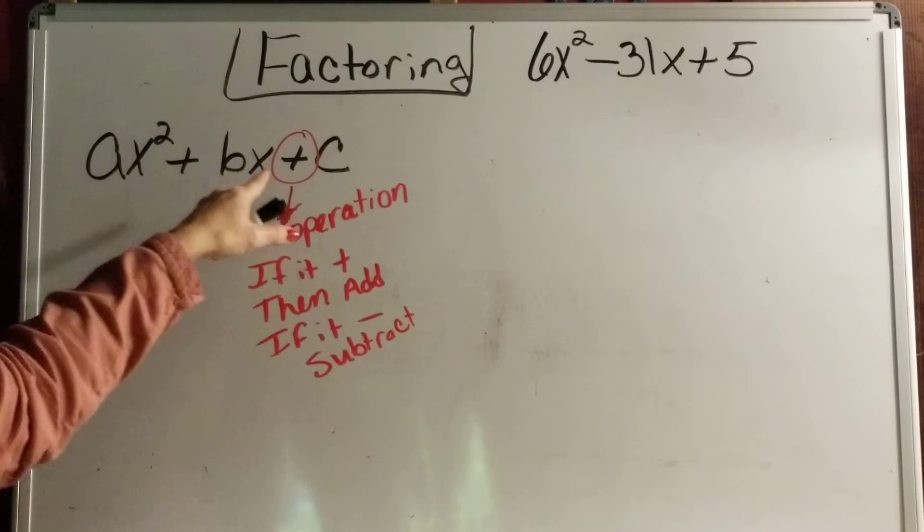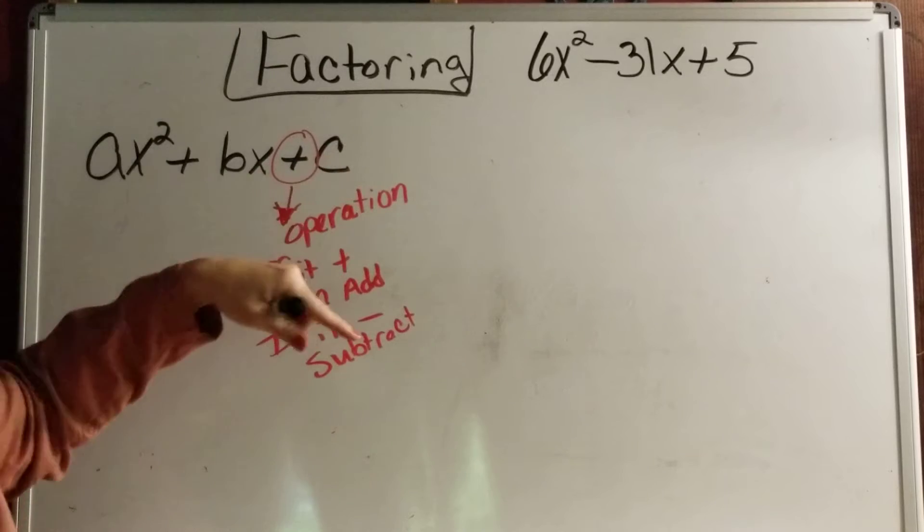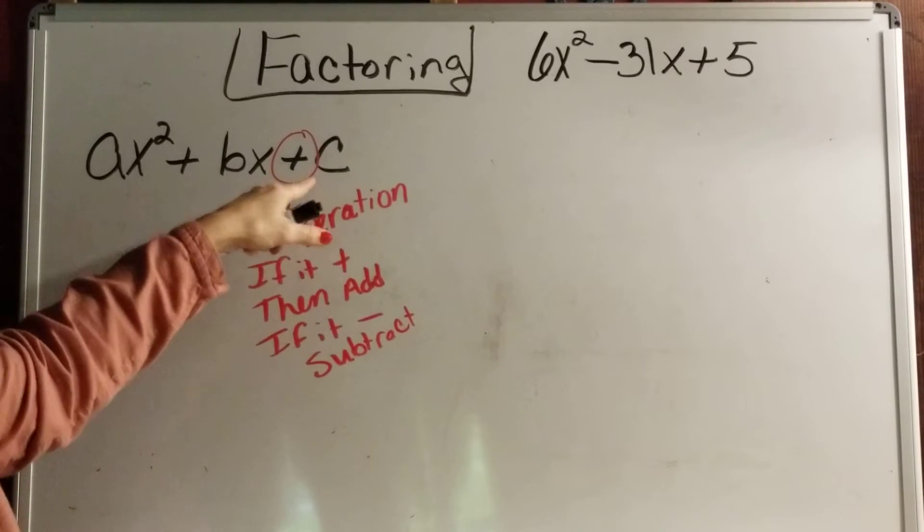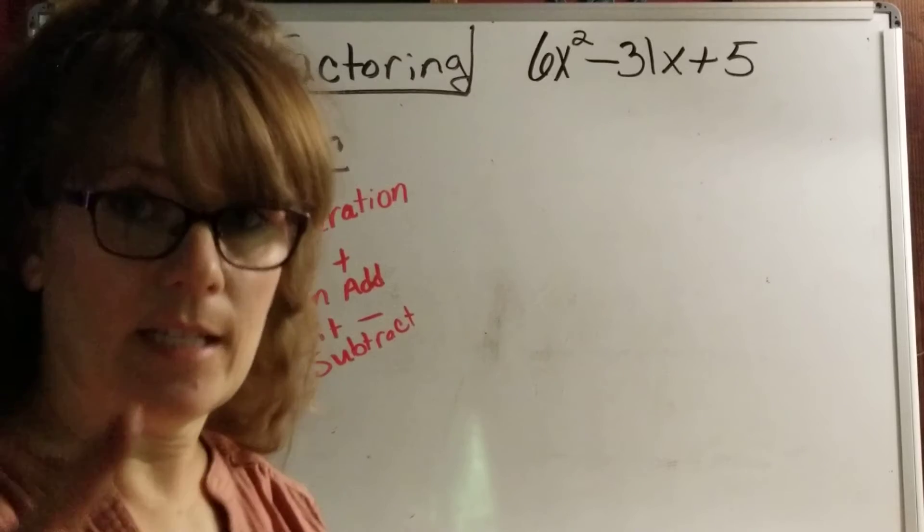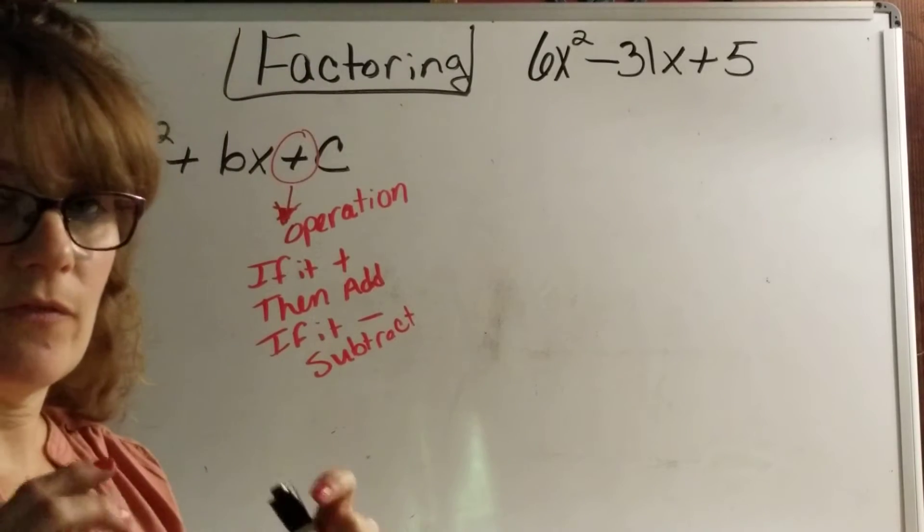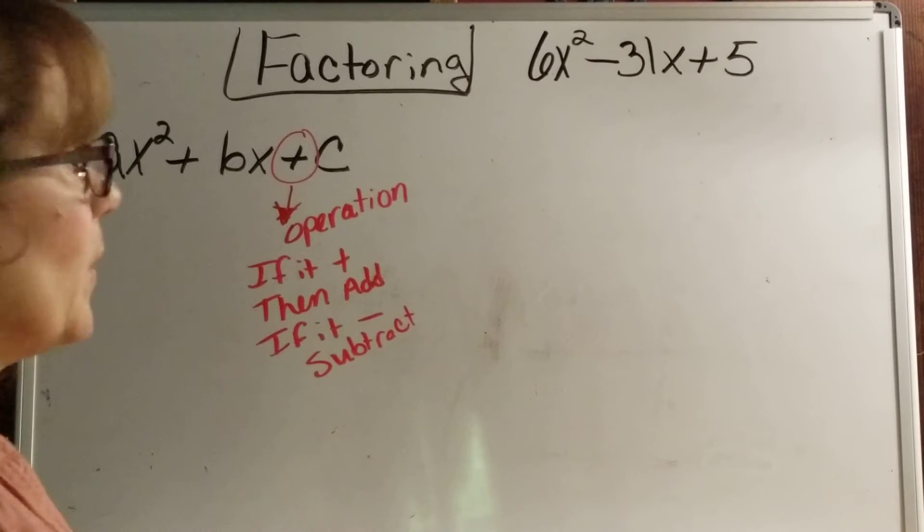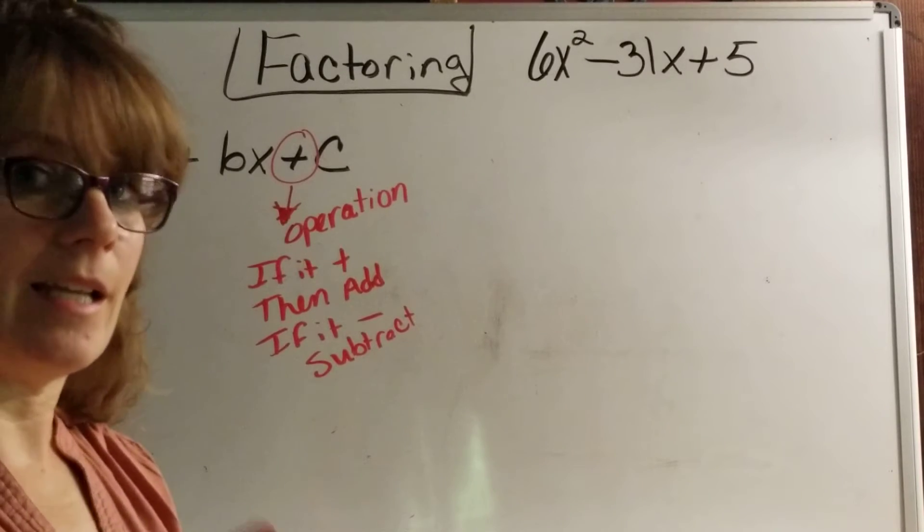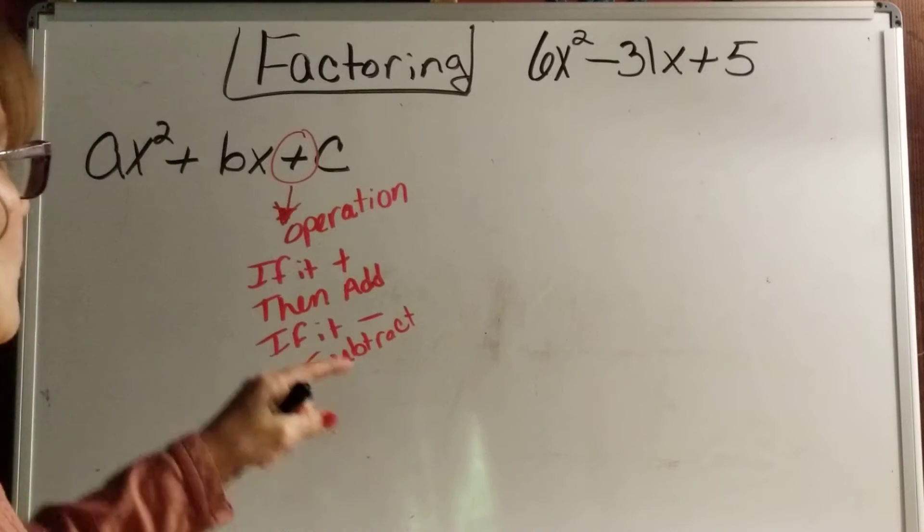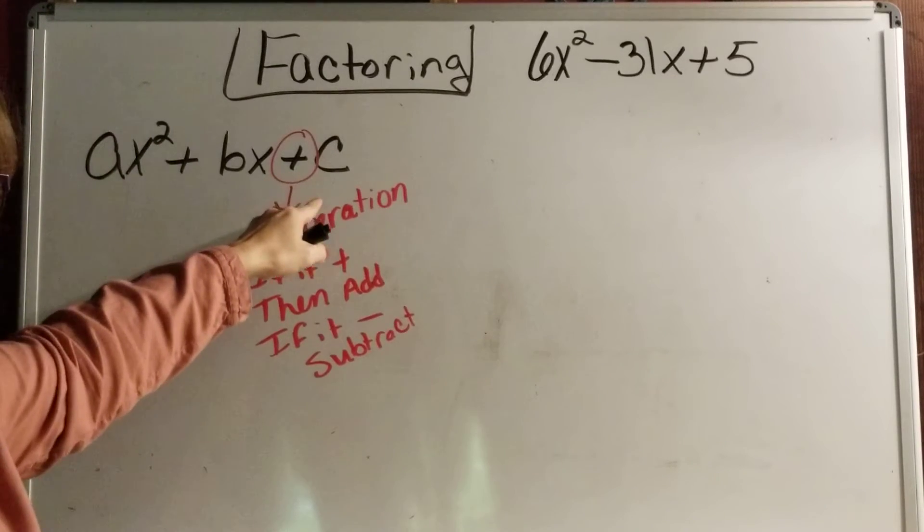So whatever my sign is on C, which is my constant term here, if it is negative, then that means we're going to find a product that subtracts. If it's positive, then we're going to find a product that can add. Just know that this sign tells me the operation.